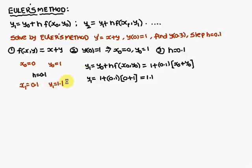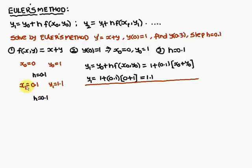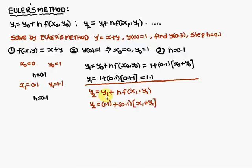We have to find y of 0.3, that means if x is equal to 0.3, y is what he is asking. So we need one more step. y2 is equal to y1 plus h into f of x1, y1. y1 is 1.1, h is 0.1, and f of x1, y1 is x1 plus y1: 0.1 plus 1.1. Substituting, y2 is equal to 1.22.